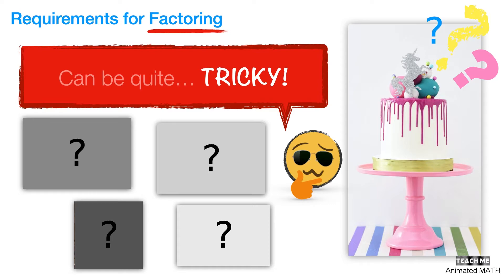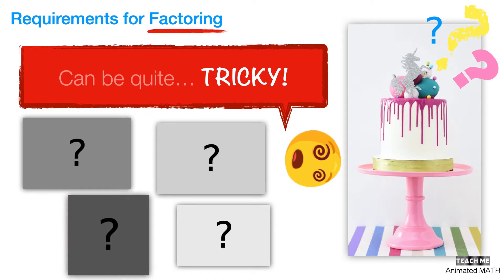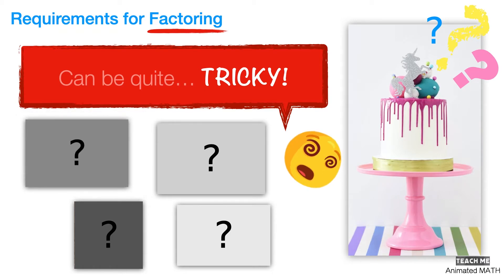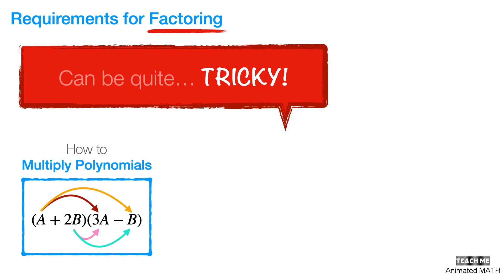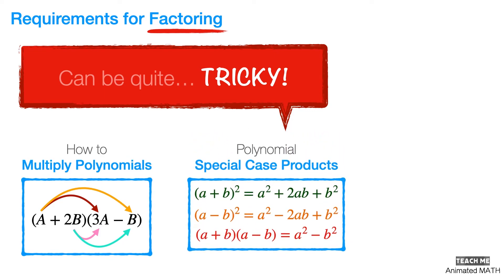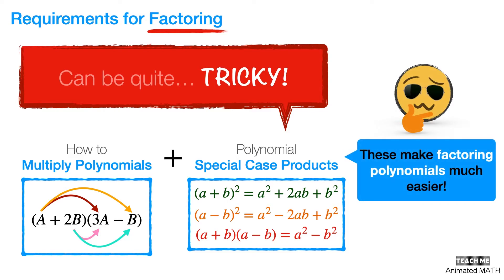But what if you lack that baking experience? It can be ultra hard to figure out. Factoring means that you have to figure out what got multiplied to produce the polynomial expression you were given. And in this case, that baking experience is actually polynomial multiplication and polynomial special case products. The more familiar you are with these topics, the easier it'll be for you to factor polynomials.